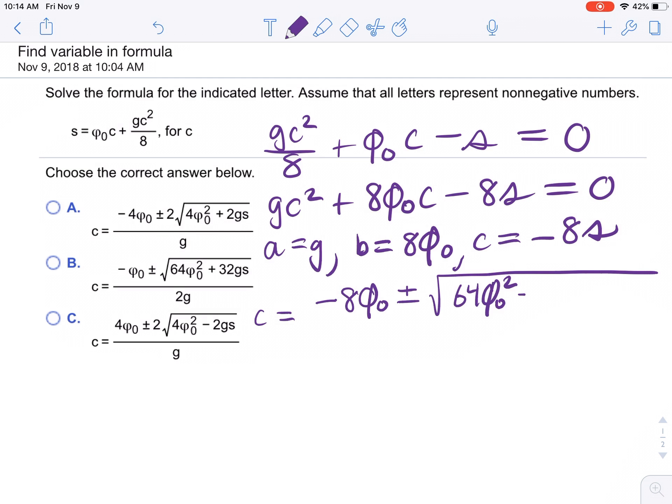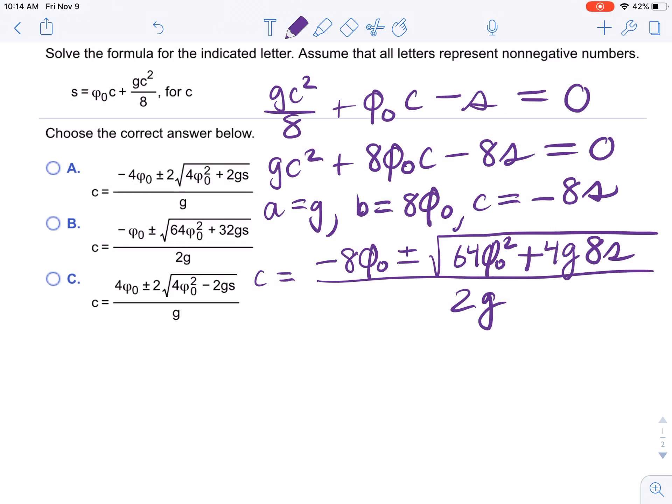So minus 4 times g times c, that's negative 8s, let's make that positive, divided by 2g. Under the radical we want to factor that, so we're gonna get negative 8v sub 0 plus or minus...